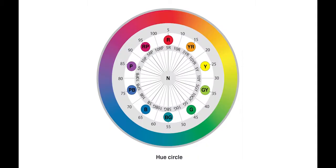The system uses letters and numbers to describe the three dimensions of colour – hue, value and chroma.